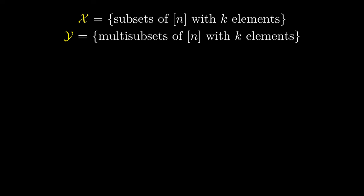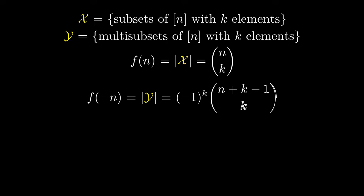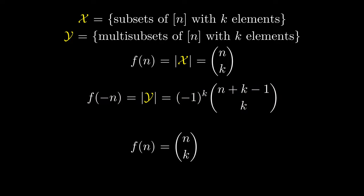Let's recap what we just figured out. Let's name our two classes of combinatorial objects. X is the subsets of n with k elements, and Y is the multi-subsets of n with k elements. We can count X using the function f of n, and we can count Y by taking the absolute value of f of negative n. This is known as combinatorial reciprocity, where two different but related counting problems can be solved using the same polynomial function — one uses positive integer inputs and the other uses negative integer inputs. And this is where we get our funky negative choose notation.